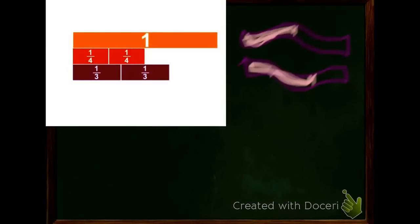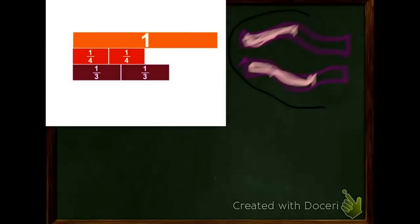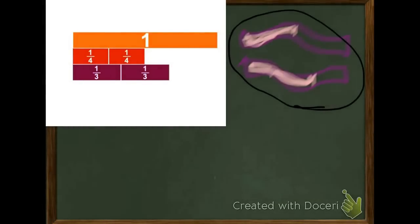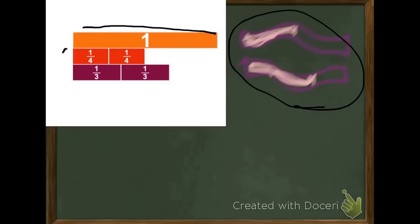Let's look at another example. Let's say that I have two ribbons the exact same size. One of the ribbons is 2 fourths pink, and the other one is 2 thirds pink. Which fraction is less, 2 fourths or 2 thirds? So, I'm going to use my fraction strips to compare. Here's my 1 whole, and then I've got my 2 fourths right here, and I've got my 2 thirds right here.